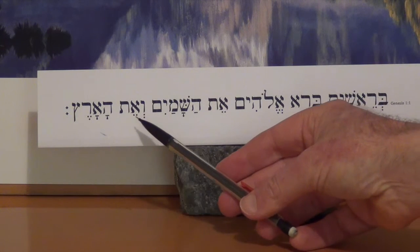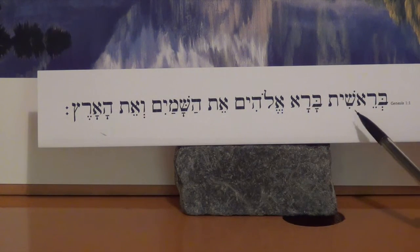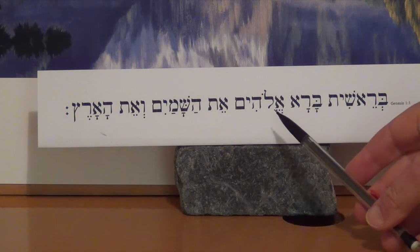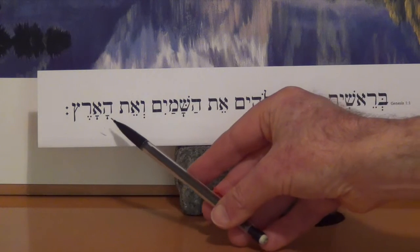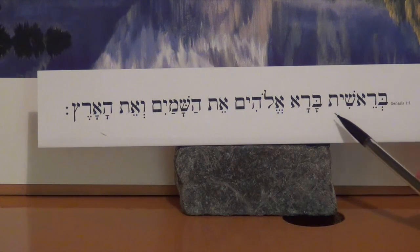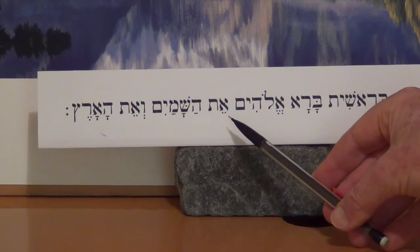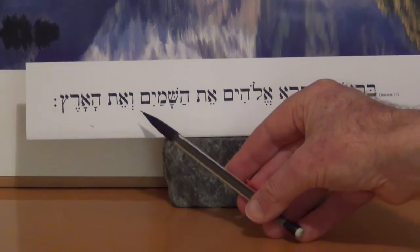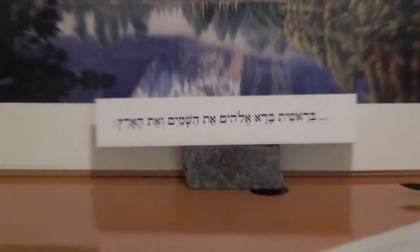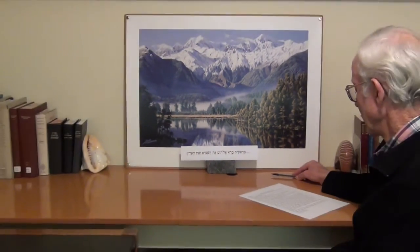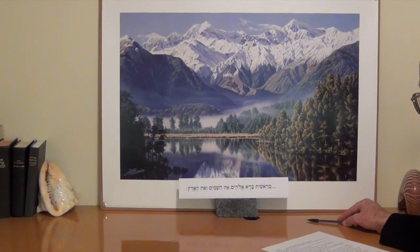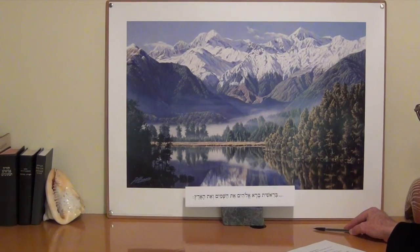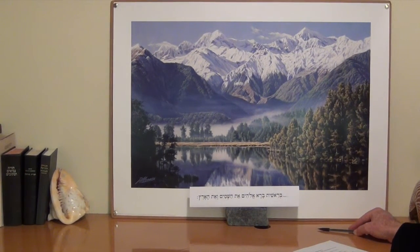'Bereshit bara Elohim et ha-shamayim wa-et ha-arets.' In the beginning, God created the heavens and the earth. The scientist's quest has been very successful, and the truth of Genesis 1:1 continues to shine, even though ironically, modern science tries to keep God out of the picture.